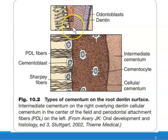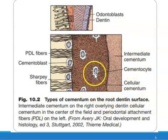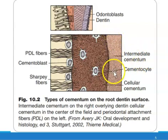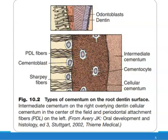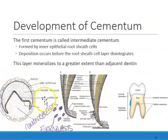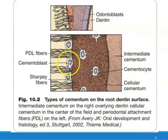The other layer is known as cellular cementum, and the reason why it's called cellular cementum is because there are cells in there. Intermediate cementum can also be called acellular cementum because there's no cell — 'a-cellular' means no cells. In cellular cementum, you can see cells embedded inside. These are cementoblasts from the dental follicle that differentiated and are making cementum.